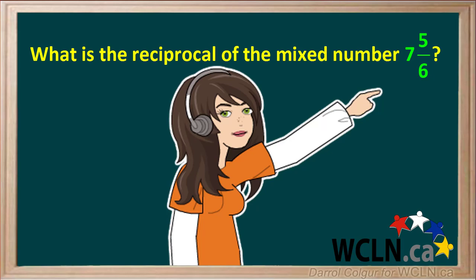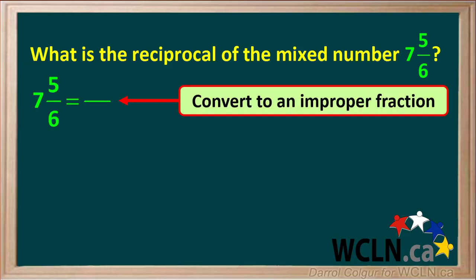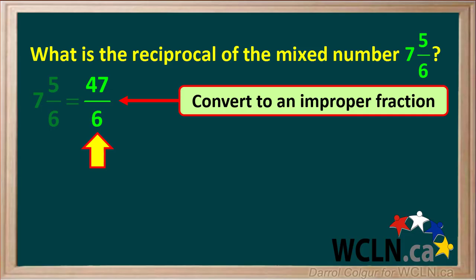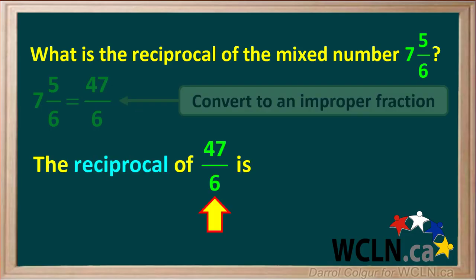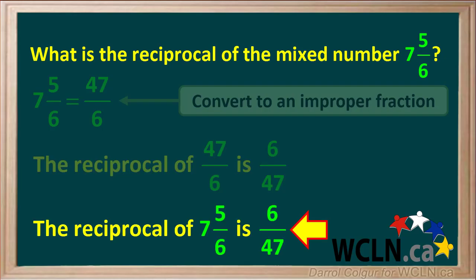Let's do an example. Let's say we are asked to find the reciprocal of the mixed number 7 and 5/6. The first thing we do is convert the mixed number to an improper fraction. The denominator is 6. To find the numerator, we go 7 times 6, which equals 42, and we add the numerator of the fraction in the mixed number, which is 5, to give us 47. So our improper fraction is 47/6. To find the reciprocal of 47/6, we just flip it, so the reciprocal is 6/47. The reciprocal of 7 and 5/6 is 6/47, or six forty-sevenths.